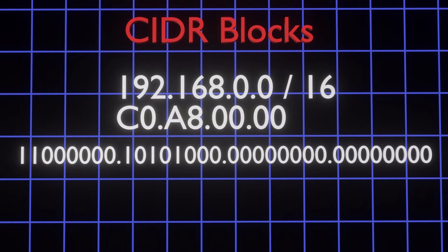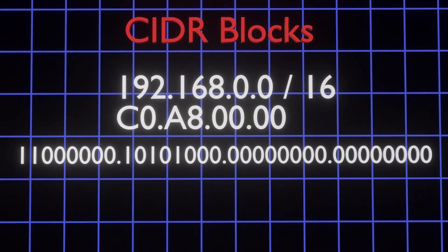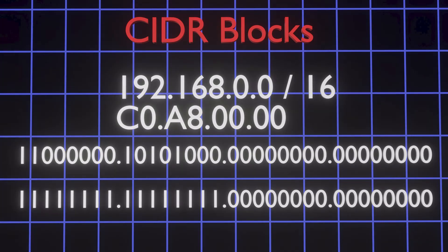Why binary? Because the number after the slash tells you how many significant bits there are in the address space. That information is used to create a bit mask. The bit mask for a slash 16 number is a 32-bit binary number with the first 16 bits set to 1 and the last 16 bits set to 0.